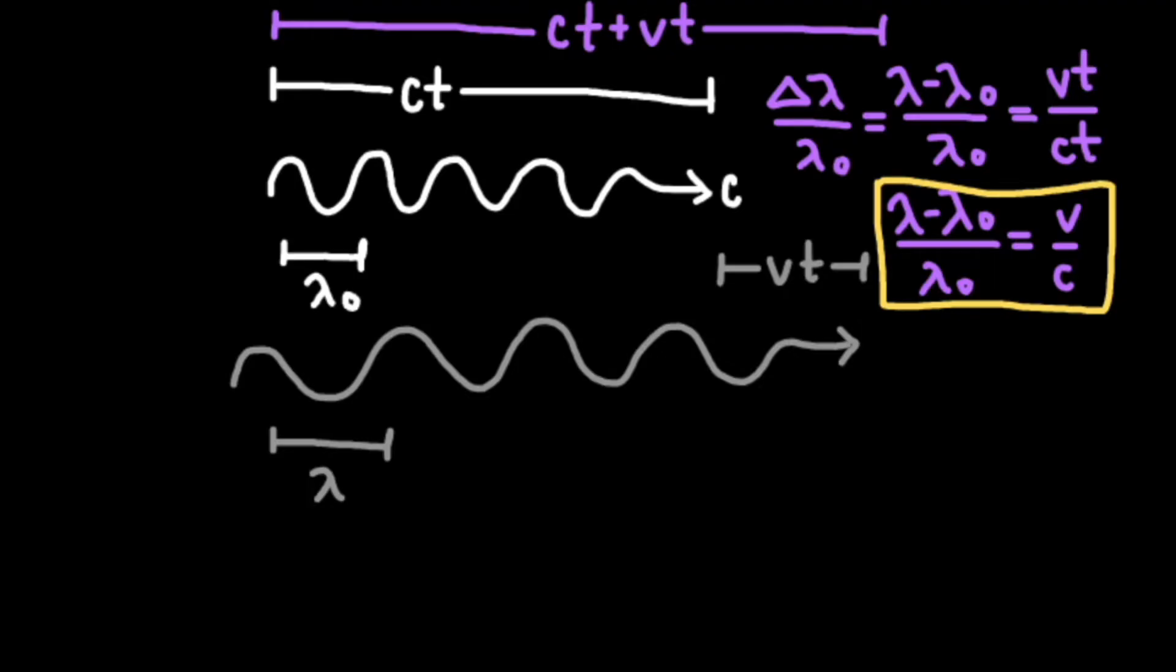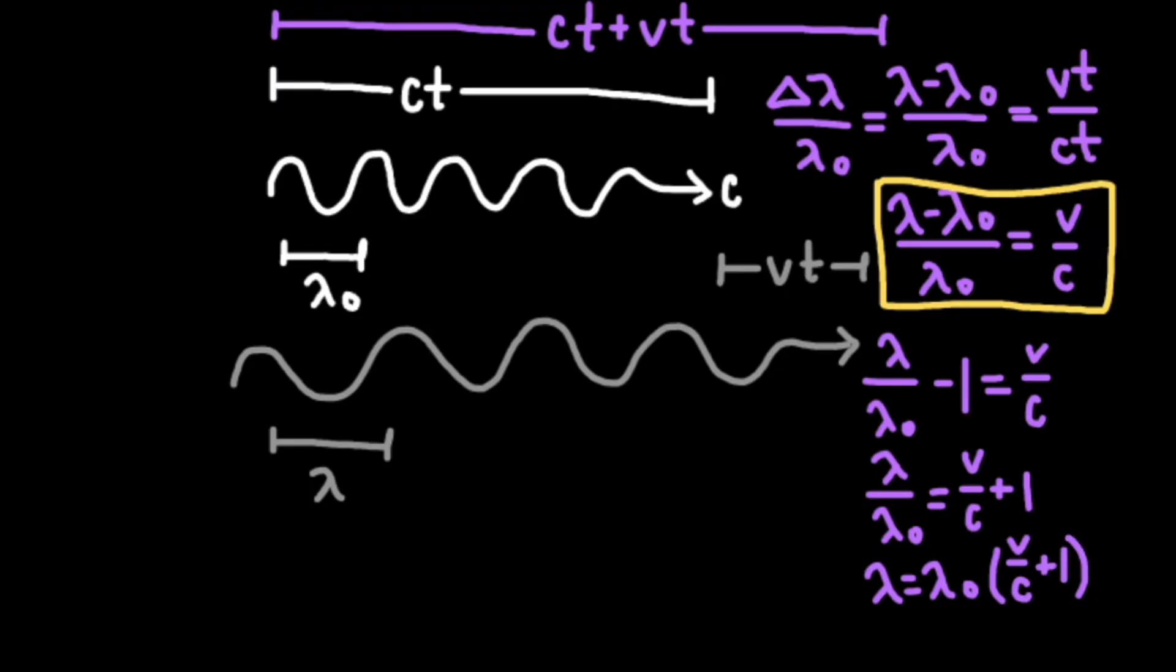Now, sometimes you will see the equation written in a different format, so let's write it in a different way. We can rewrite the left-hand side of our equation as lambda over lambda naught minus 1 (λ/λ₀ - 1). We can then add 1 to both sides of our equation to get a ratio for the observed wavelength over the initial wavelength. Lastly, to isolate our observed wavelength on one side of the equation, we can multiply both sides by lambda naught.